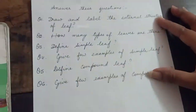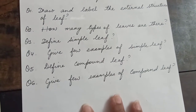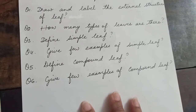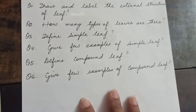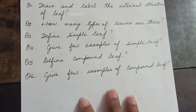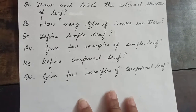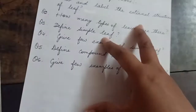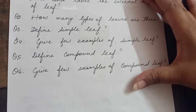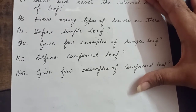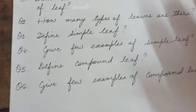The second question is: how many types of leaves are there? The third question is: define simple leaf. The fourth question is: give few examples of simple leaf. Question five is: define compound leaf. And question six is: give few examples of compound leaf. With this, the assignment is over. We'll give you the third assignment after a few days. Thank you.